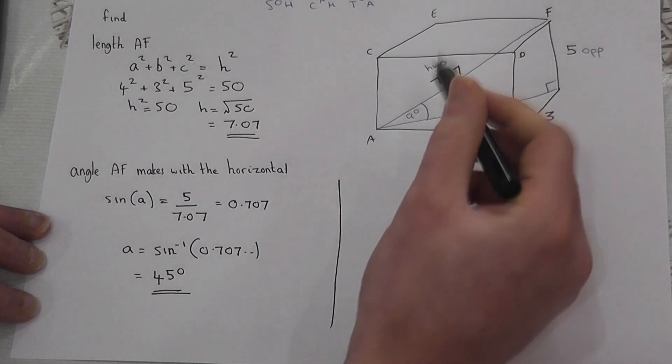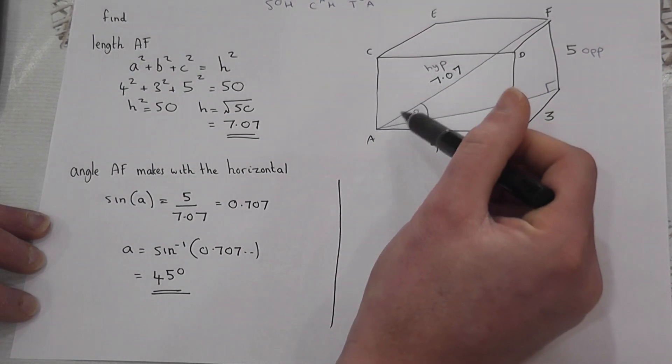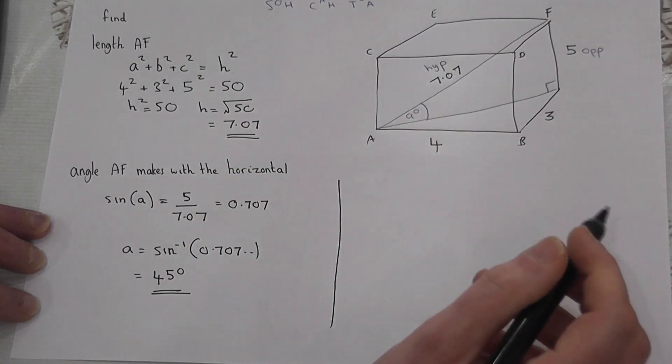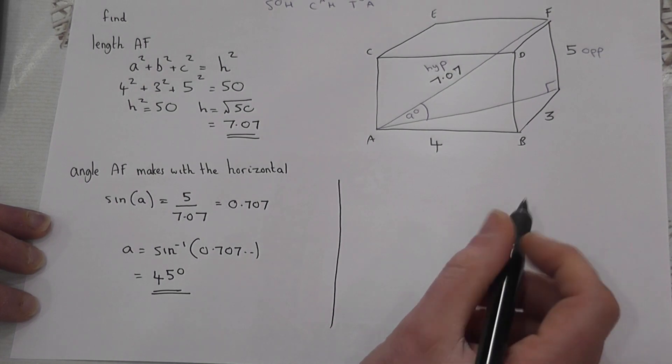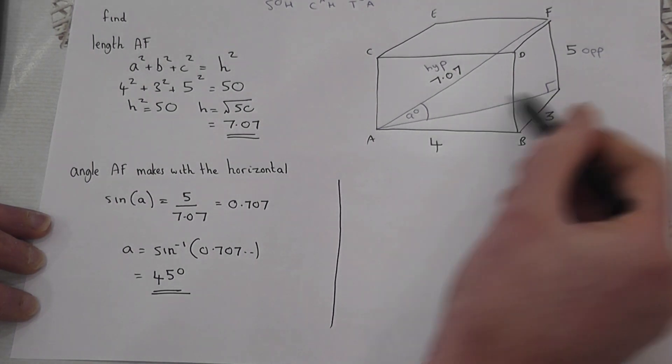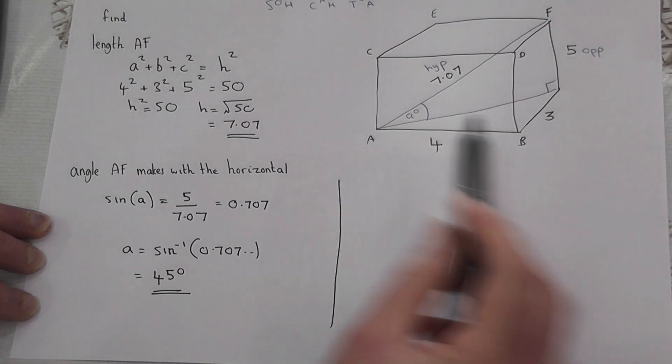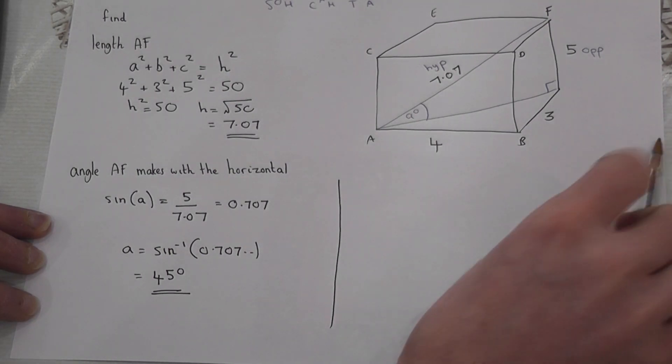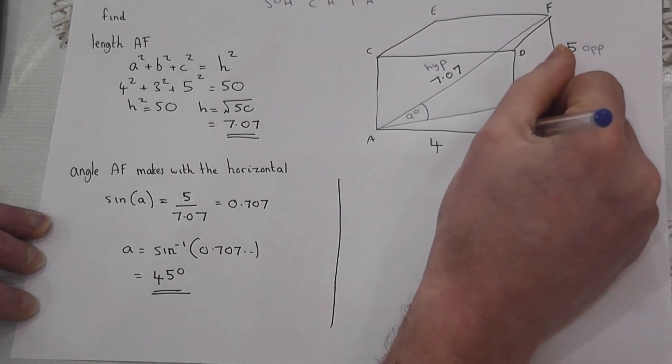Now suppose we didn't know this hypotenuse. Another method is to actually find this length here instead, because I also know that this is a right angle down here as well.